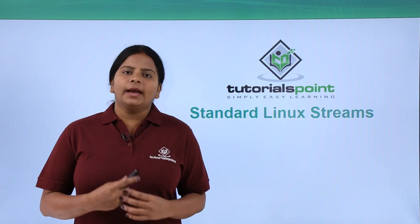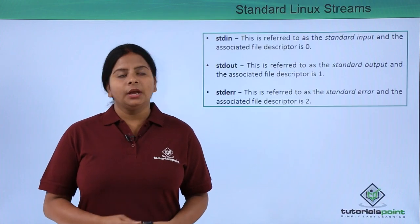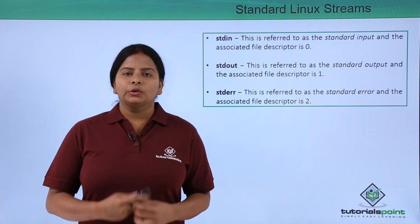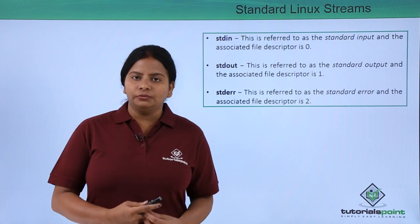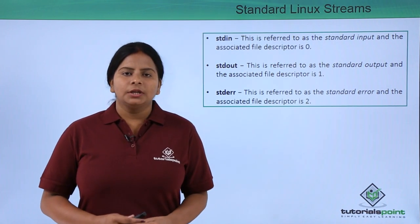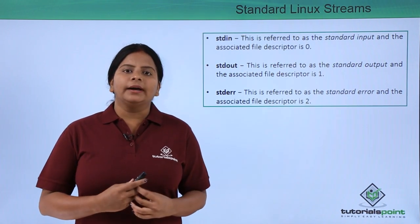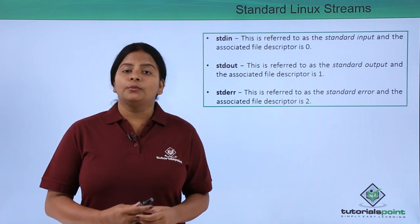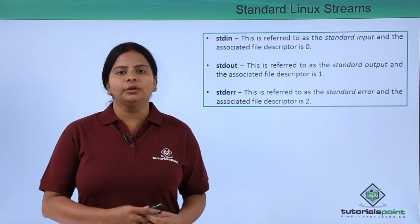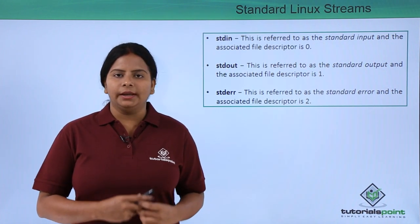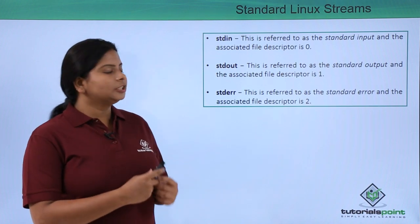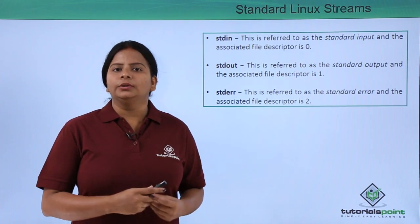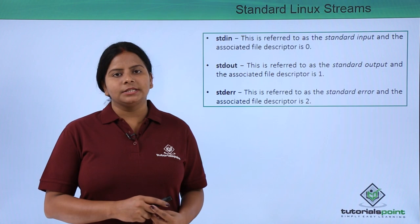We have three types of streaming files. The very first is called stdin. This is a standard file where it takes the input. Once we define the input, that is called stdin. The file descriptor for stdin in the Linux operating system is zero.